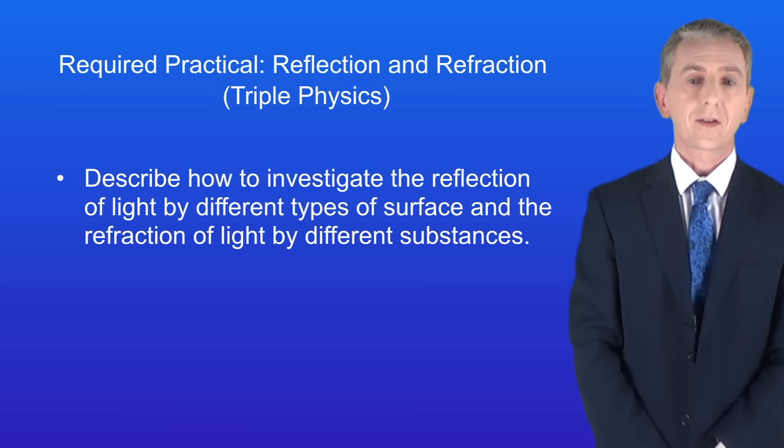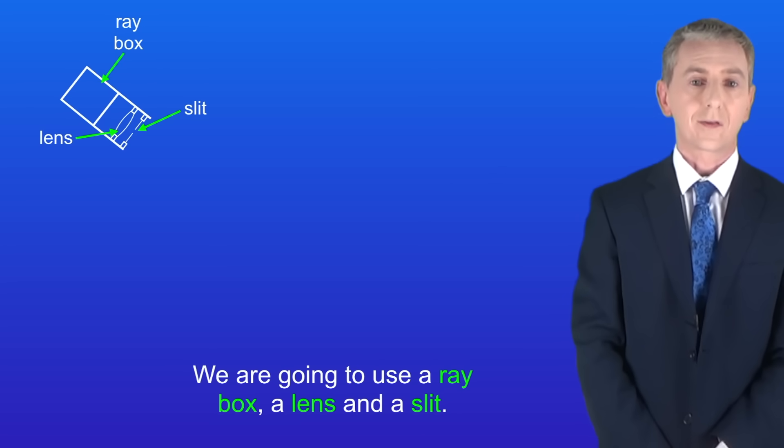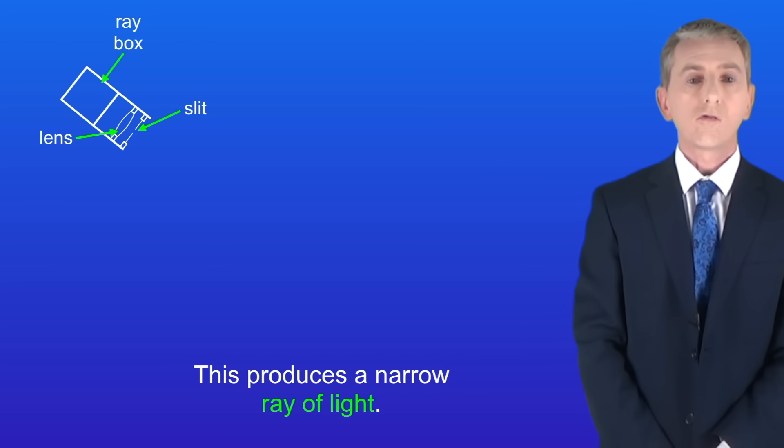So in this practical we're investigating reflection and refraction. To do that we're going to use a ray box, a lens and a slit. This produces a narrow ray of light.